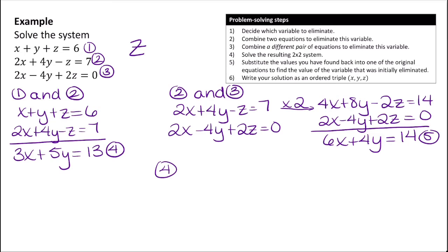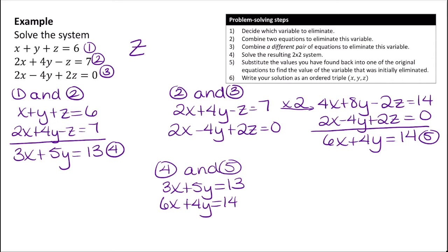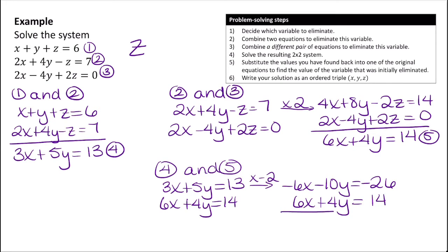Now I'll combine equations 4 and 5. Equation 4 is 3x plus 5y equals 13, and equation 5 is 6x plus 4y equals 14. I'll eliminate x by multiplying the top equation by negative 2, giving negative 6x minus 10y equals negative 26. Adding to 6x plus 4y equals 14, the x terms cancel. Negative 10y plus 4y is negative 6y, and negative 26 plus 14 is negative 12. Dividing both sides by negative 6 gives y equals 2.